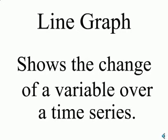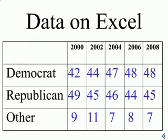A line graph shows the change of a variable over a time series. Now let's suppose we enter the data like this. We look at the three different categories of votes — the Democrat, the Republican, and the other — and then we look at five different election cycles, say for a congressional race.